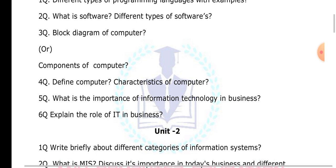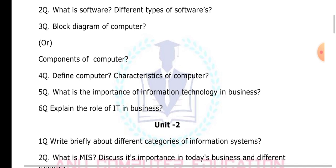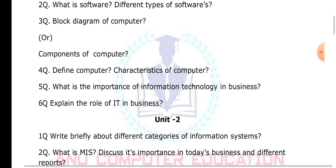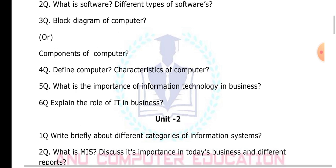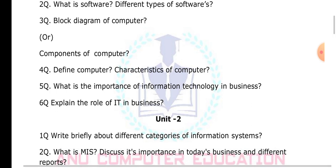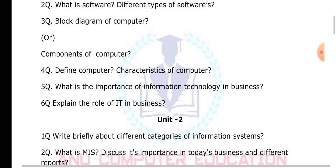The information system is useful for the organization to make certain decisions. There are many different types: Decision Support System (DSS), Management Information System (MIS), and Expert Support System. You have to explain all of these. MIS is used to take decisions. In every company, problems are of two types: structured and semi-structured. MIS solves only structured problems.